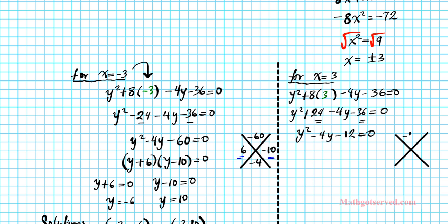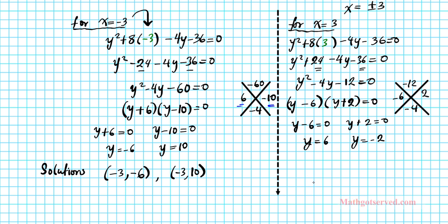AC is -12, B is -4. The two numbers that work are -6 and 2. So we have (y - 6)(y + 2) = 0. Using the zero product property, y - 6 = 0, y + 2 = 0. This follows that y = 6 and y = -2. This is for when x is 3 so we also have (3, 6) and (3, -2).